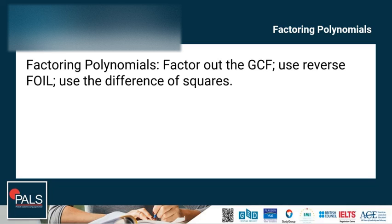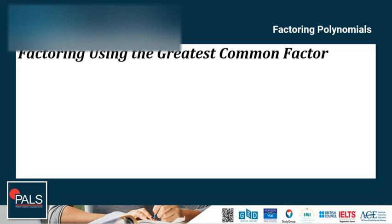Let's start with factoring using the greatest common factor. The greatest common factor, or GCF, between two terms is the largest factor that both terms share. To understand this better, consider the terms x cubed plus 4x squared. You can rewrite these terms showing all of their factors.